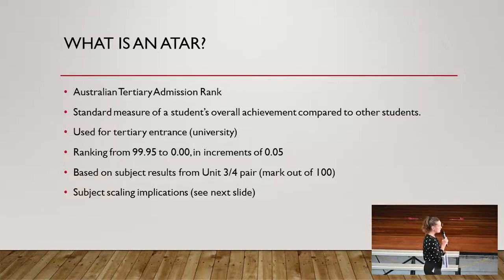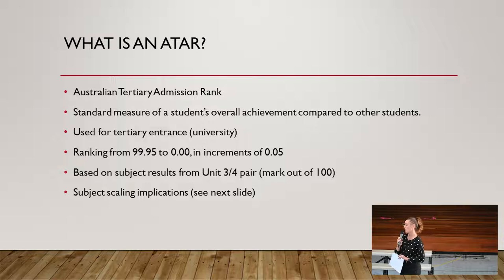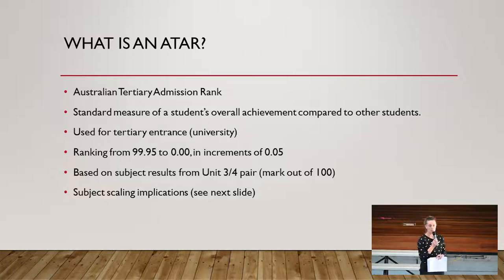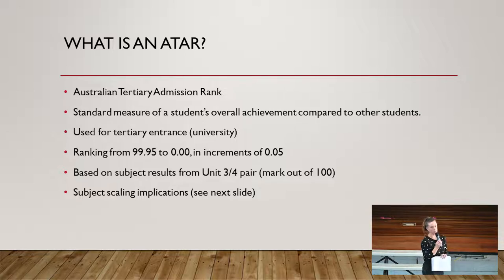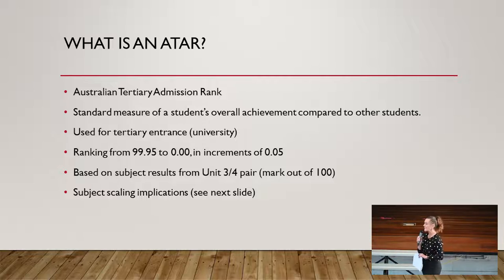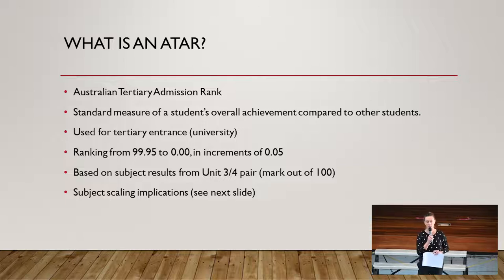ATAR eligibility — it is a ranking from 99.95, which is the top score you can get, all the way down to 0.05. If you are 30 or lower, they just give you 30. It is based on the subject results that you get in your general subjects across the unit 3-4 pair. At the end of a unit 3-4 pair in your subjects, you will get a mark out of 100, and that is what is used to calculate your ATAR rank. There is also subject scaling that comes into play in relation to that mark out of 100 and how that is factored into your ATAR score.